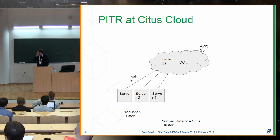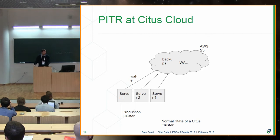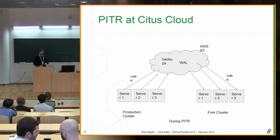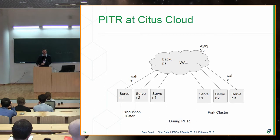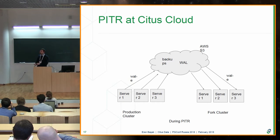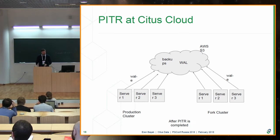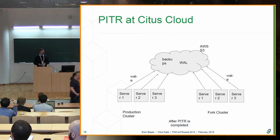To illustrate how it works in Citus Cloud: initially you have a production cluster with three servers. With WAL-E we take backups and ship WAL to Amazon S3. When you want to create a point-in-time recovery, you create a fork of your cluster that fetches backups and WAL files from the cloud — during PITR the new servers only fetch from S3, they don't push to it. After point-in-time recovery is completed, you have a new cluster with its own timeline and lifespan, including its own backups and WAL files going forward.